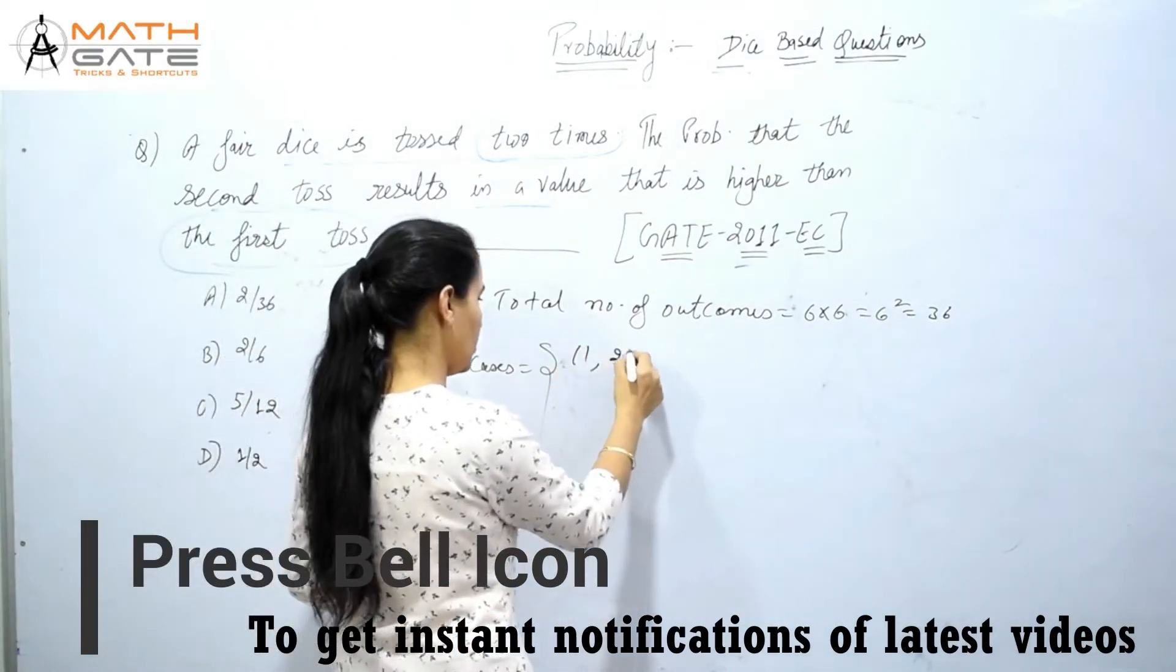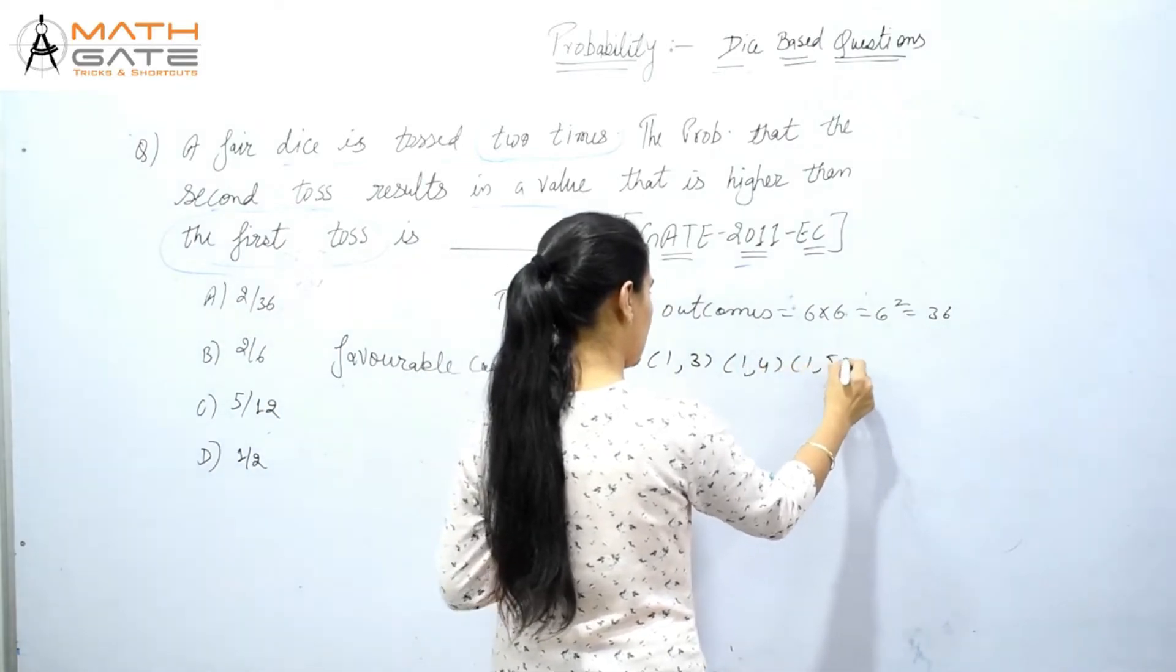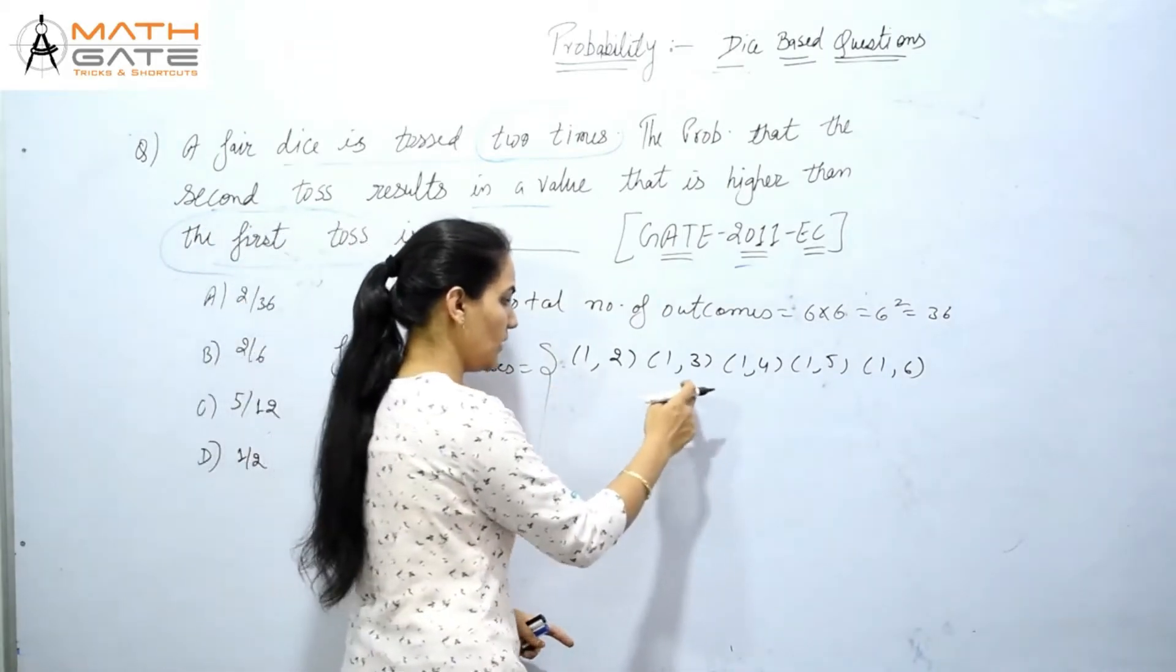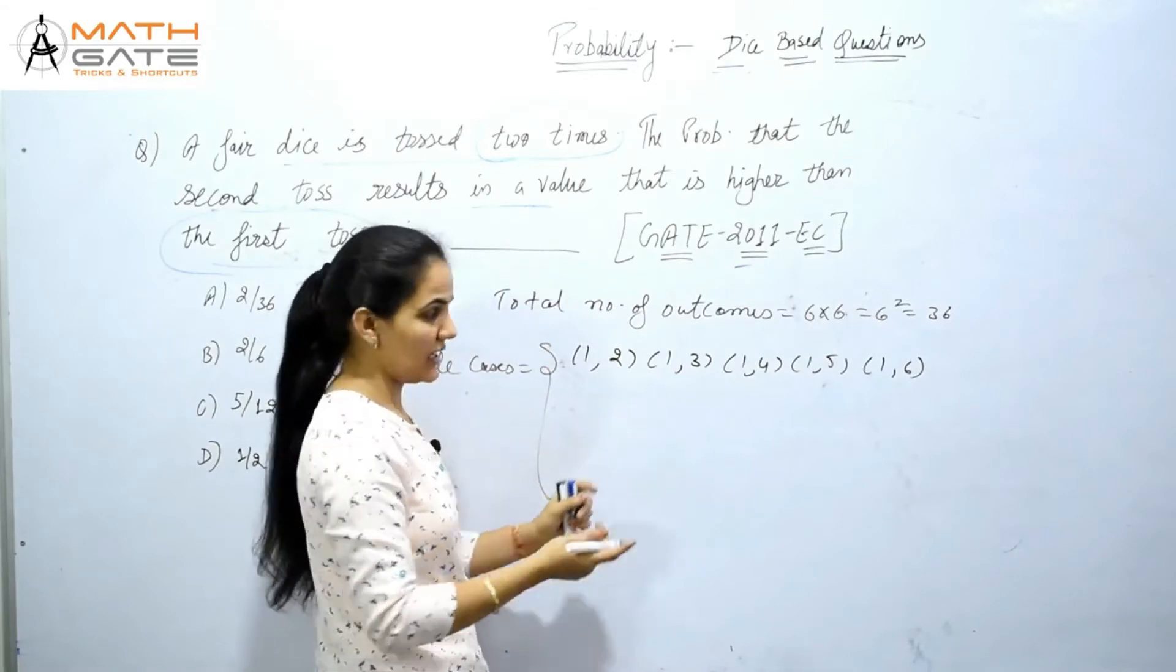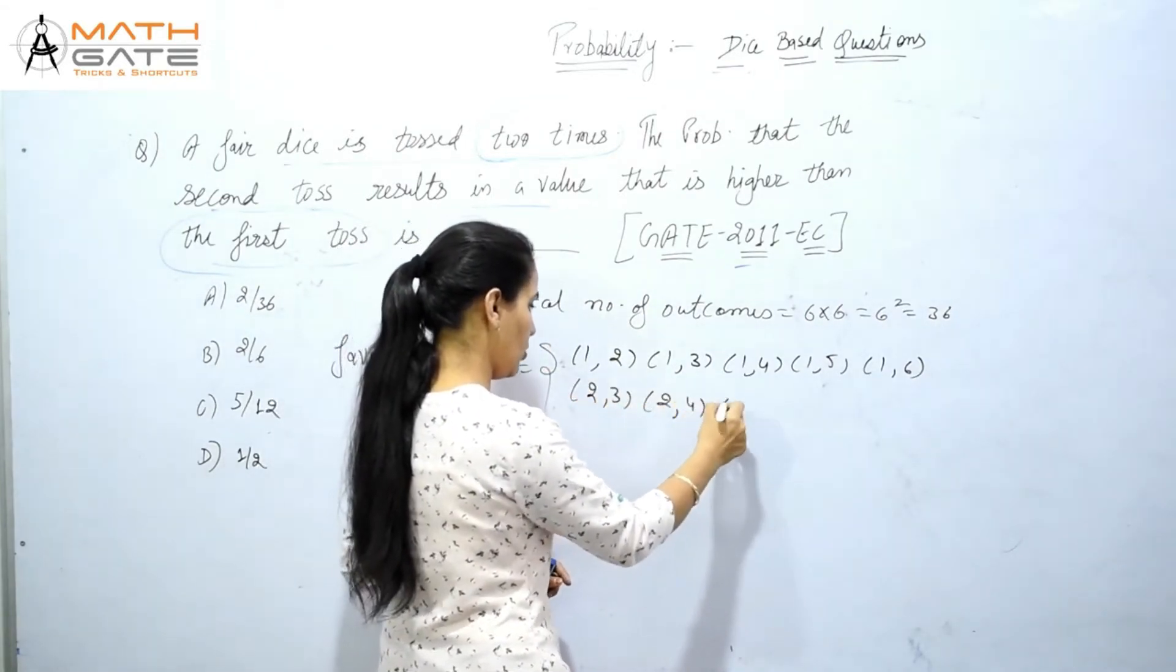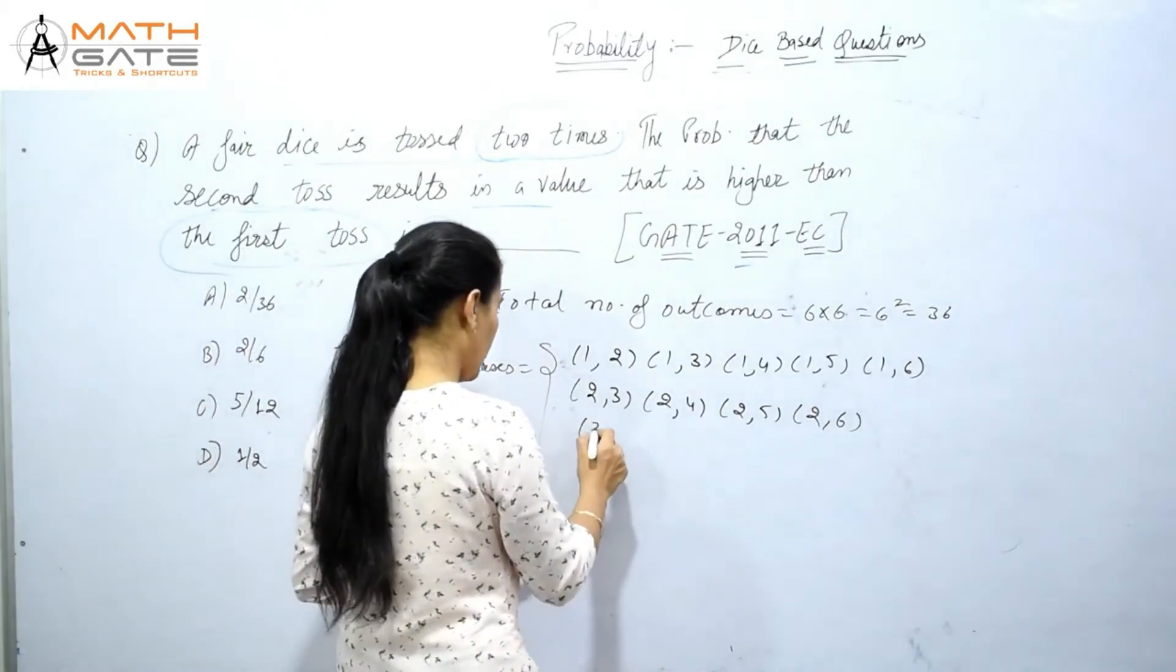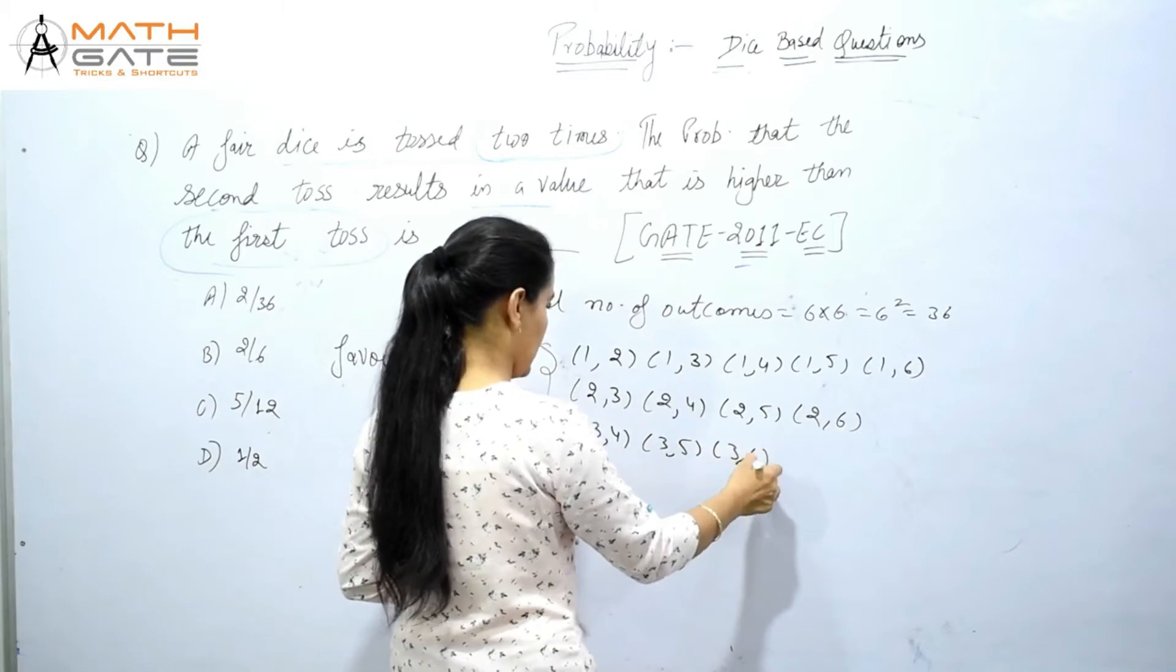The favorable cases can be: one-two, one-three, one-four, one-five, one-six. In these cases, our requirement is satisfied - the second dice value is higher than the first. Or we can write: two-three, two-four, two-five, two-six. In this case also, the second value is higher than the first.